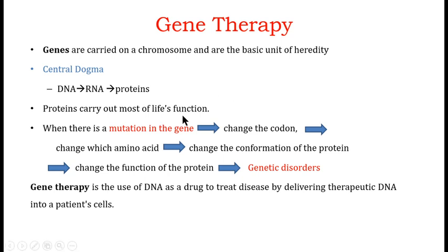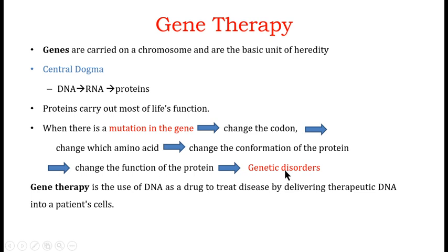Since genes are responsible for making proteins, when there is a mutation in a gene — meaning you have a different gene than the wild type — that mutated gene causes a change in the codon. A change in the codon changes the amino acid sequence, which changes the conformation of the protein, affecting its function and usually causing a genetic disorder. So a mutation in the gene codes for a non-functional or abnormal protein, which causes the genetic disorder.